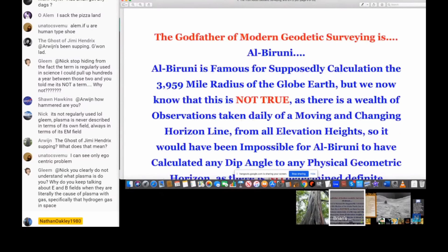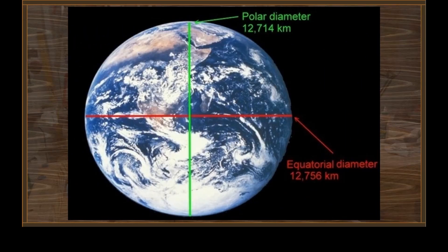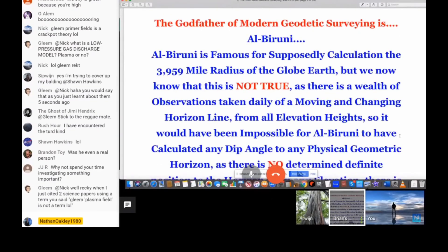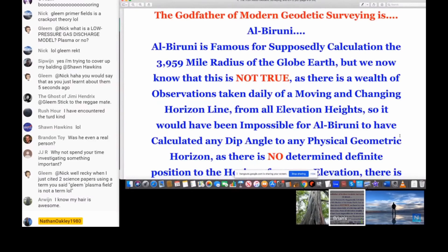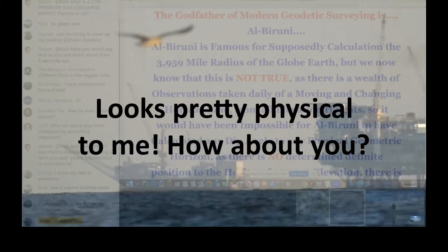Okay, the godfather of modern geodetic surveying is Alberuni. Alberuni is famous for supposedly calculating the 3959 mile radius of the globe earth. Okay, now we're off on Alberuni. When are we going to talk about the ellipsoid and the geoid and how closely they match each other? When are we going to start talking about how we've measured that very accurately with our GPS satellites? So my point here is that he couldn't have done this, but yet he's the backbone of modern geodetic surveying. So I'm kind of showing from the very start where they're taking something as a pre-assumption and calling it fact.